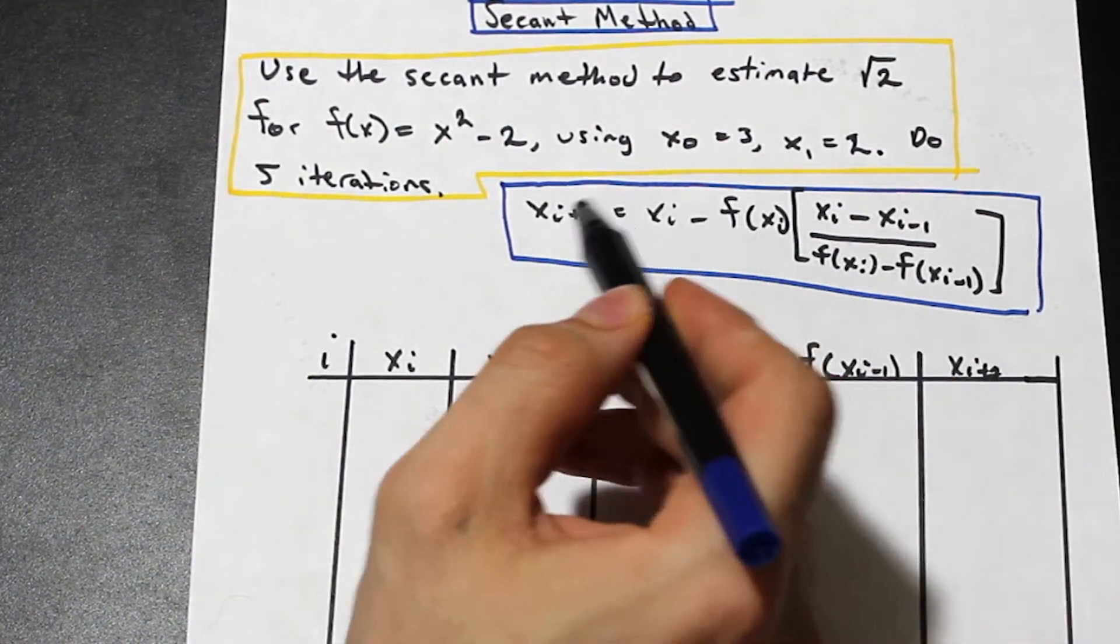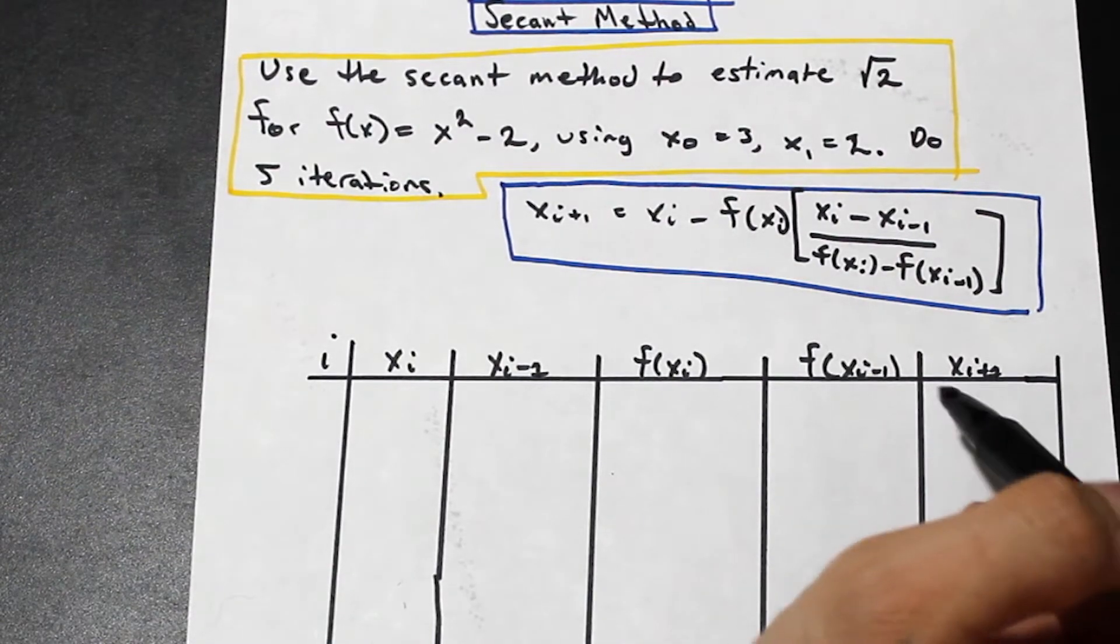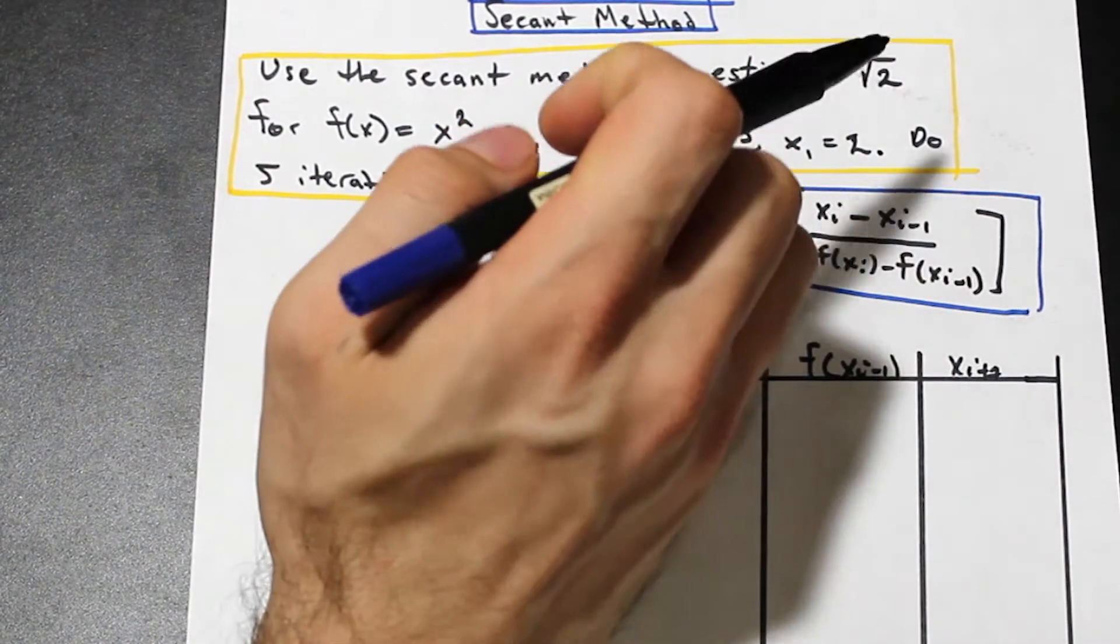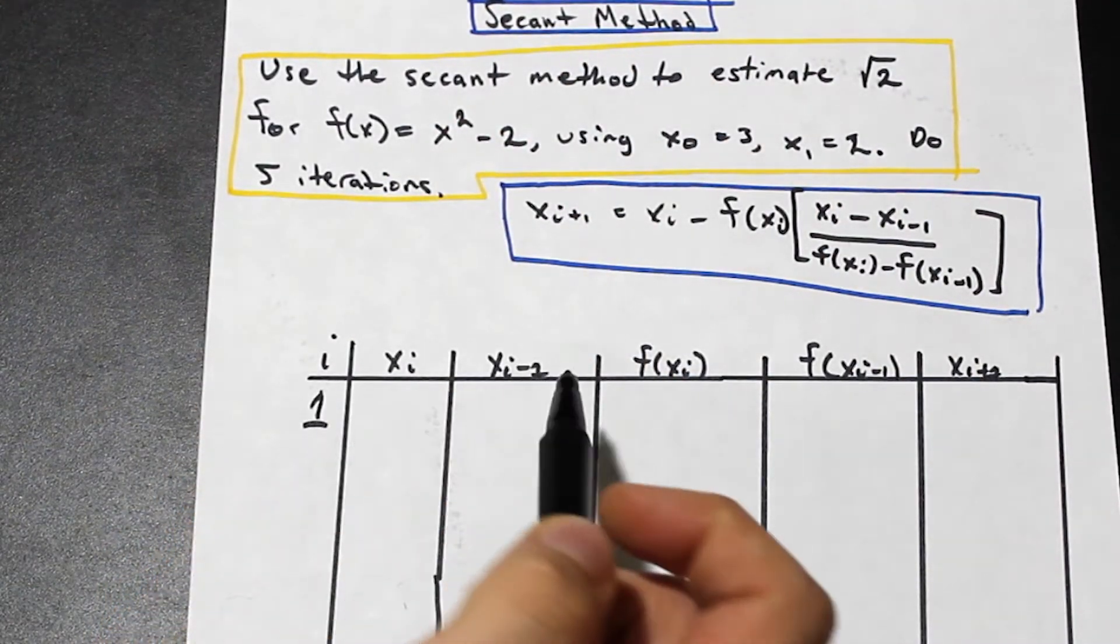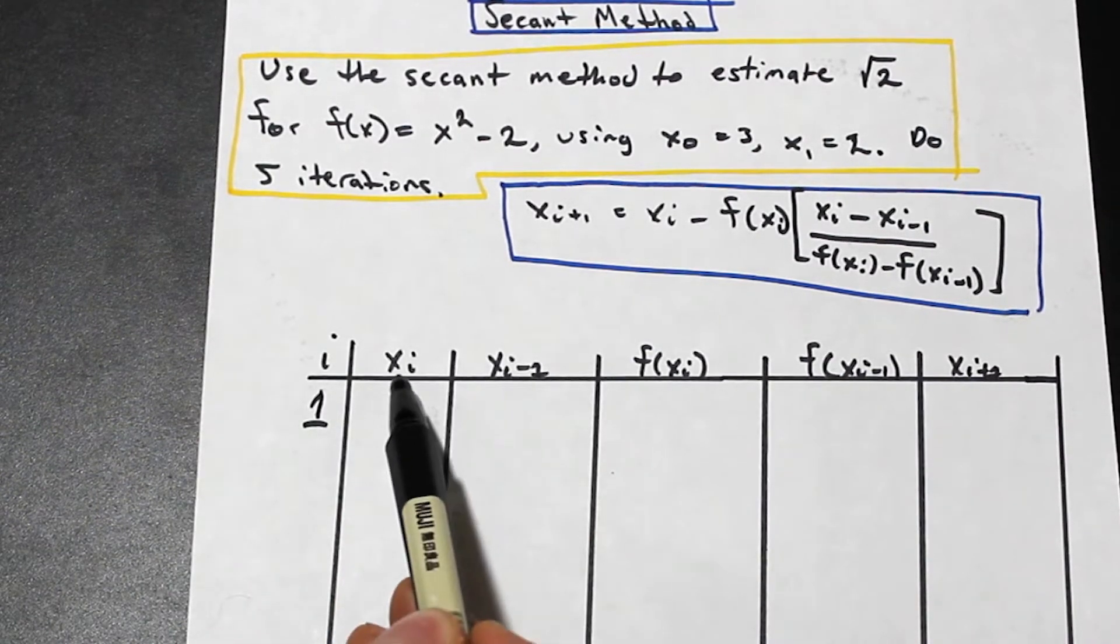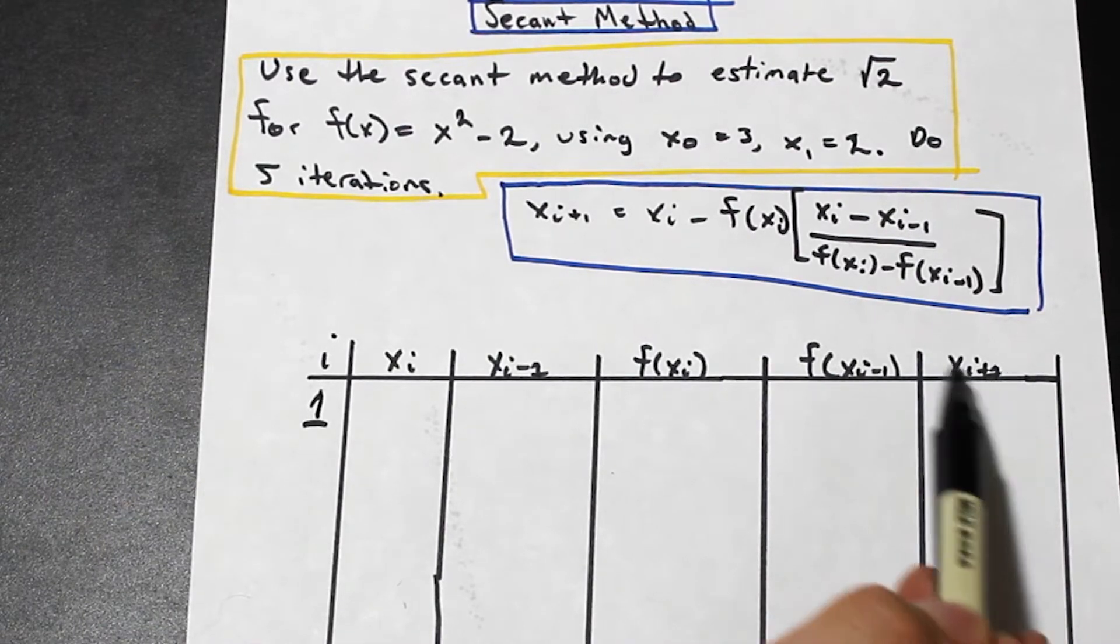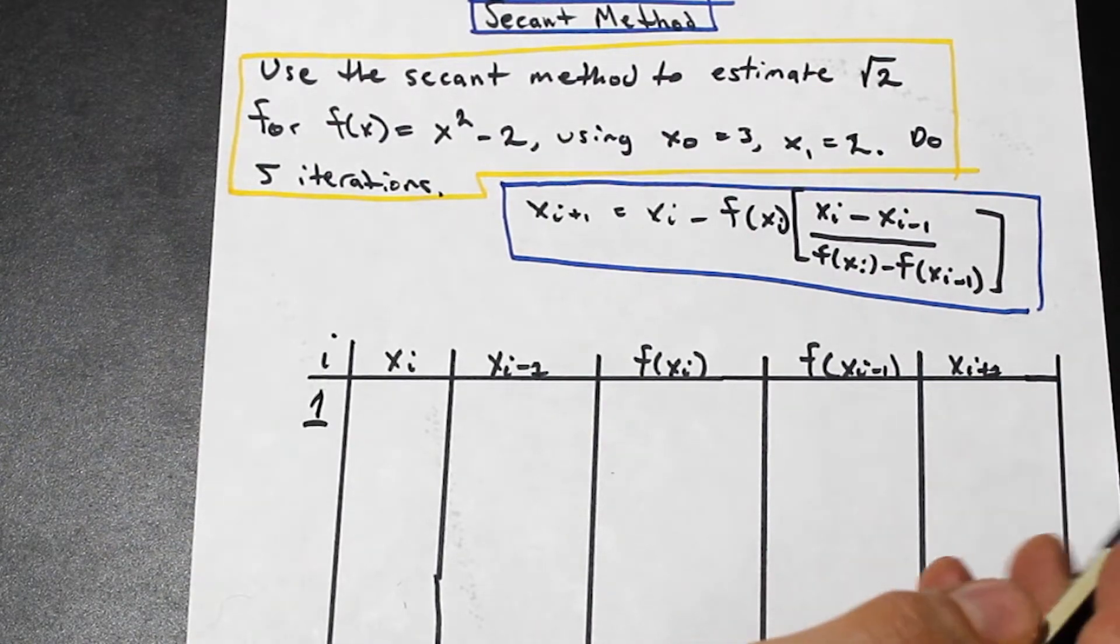Here's the formula here for xi plus 1, and this is actually the answer that we get. So this here is the approximation, and then we're going to do 5 of these. So first is going to be iteration number 1. And what is our xi and what's our xi minus 1? So just draw out this table. We have xi, xi minus 1, f(xi), f(xi-1), and then finally the approximation, which is xi+1 over here. So this is the answer on this side.